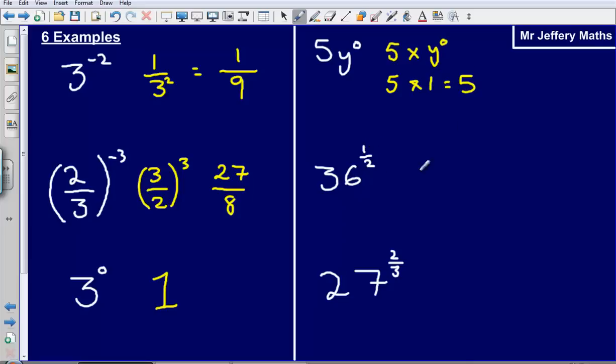Next we've got 36 to the power of 1/2. So this is going to give us the root of the bottom number. So it's going to give us the square root of 36 raised to the power of 1. Well, when we raise to the power of 1 it stays as it is, so it's just going to be the square root of 36 and that's going to give us an answer of 6.